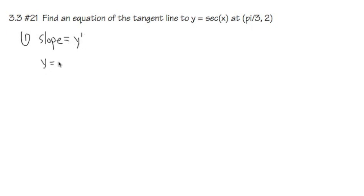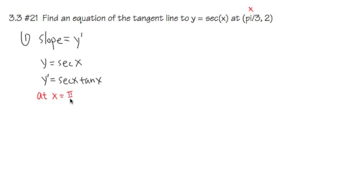We know y, the original function, is secant x. So the derivative of secant x is secant x times tangent x. Keep in mind, slope is always going to be a number at a particular x value. Here we know that x value is pi over 3. So to get the slope of the tangent line at pi over 3, I just need to plug in pi over 3: secant(π/3) times tangent(π/3).